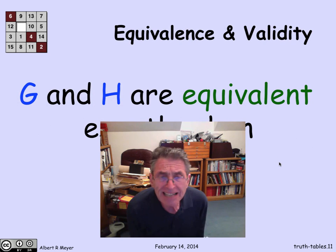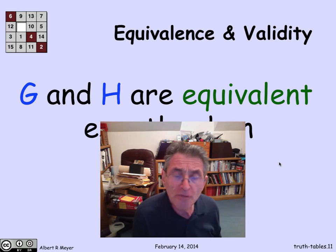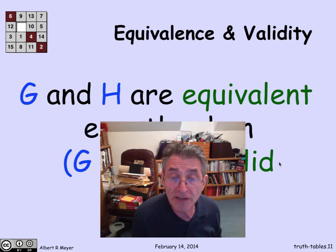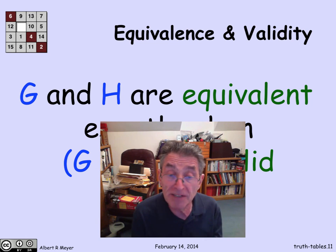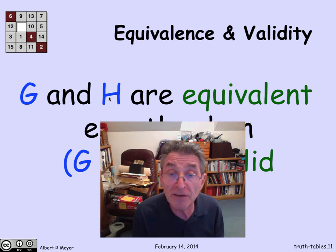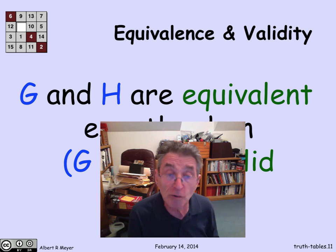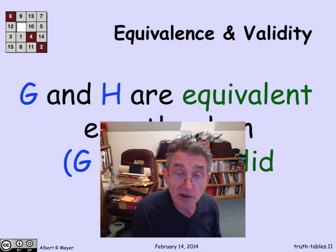We can now connect validity and equivalence. Two formulas G and H are equivalent if and only if G IFF H is valid. G IFF H comes out to be true when G and H have the same truth value, and G and H are equivalent says they have the same truth value no matter what the environment is. So if G and H are equivalent, G IFF H is valid, and the converse argument works the same way.